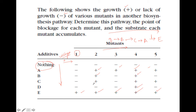Similarly, if you see mutant number 3: if you provide E it will grow, if you provide A it will grow, but if you provide B, C, or D it will not grow. This tells us that mutant 3 is between C and A. So if anything ahead of A is provided it doesn't grow, but if A or E is provided it will grow.